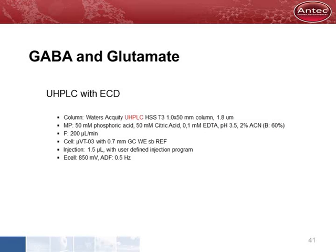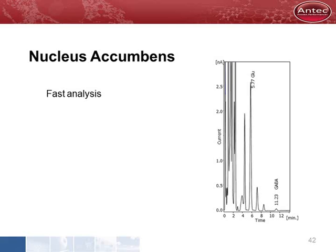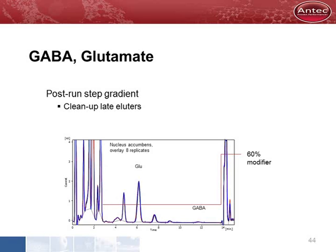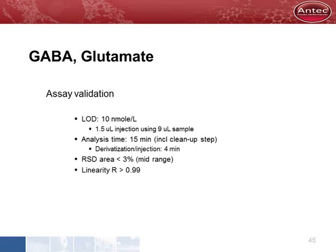We use a short UHPLC column to speed up the analysis. A real dialysis sample shows the peaks for GABA and glutamate. In the chromatogram, peaks appear between 30 and 50 minutes — these late eluters are a problem as they appear in the next chromatogram when running a sequence. To clean up these late eluting substances, we programmed a step gradient after the run. The column is washed in one minute, and during the next injection cycle the system is equilibrated and ready. A detection limit down to 10 nanomole per liter has been obtained, and the analysis time is 15 minutes including the cleanup step.